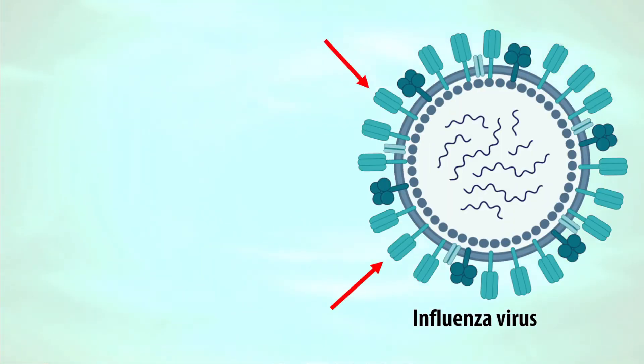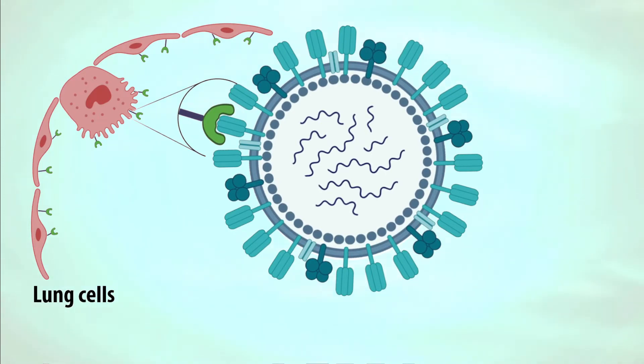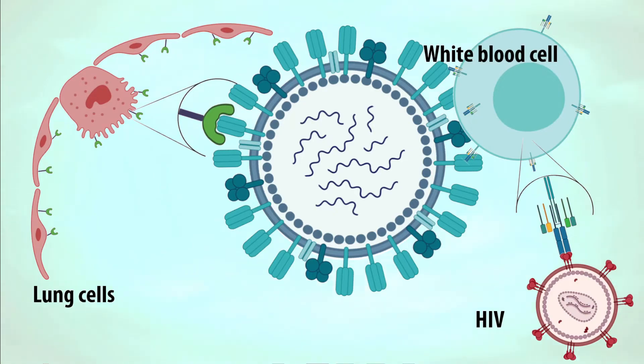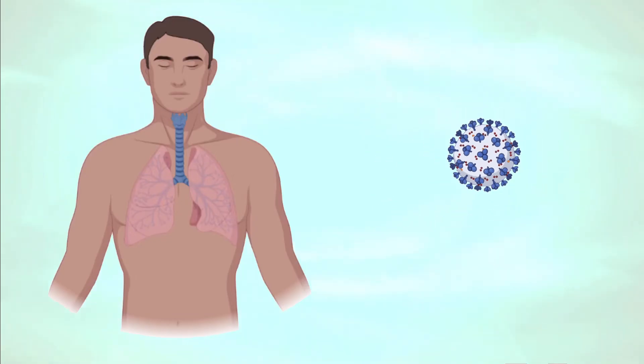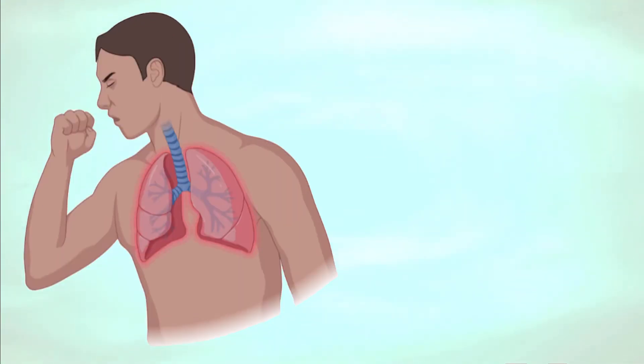Viruses have structures on their surface that let them attach to specific receptors on our host cells. Some might be the right shape to attach to lung or blood vessel cells, liver cells, or even infect our white blood cells like HIV, the human immunodeficiency virus. When viruses grow in our tissues they cause problems by damaging our cells or triggering changes that cause inflammation. Our bodies are able to get rid of most viruses easily, often without symptoms, but for some infections there are antivirals that slow the virus down and other medications like steroids that reduce the damage of inflammation caused by our own immune response.